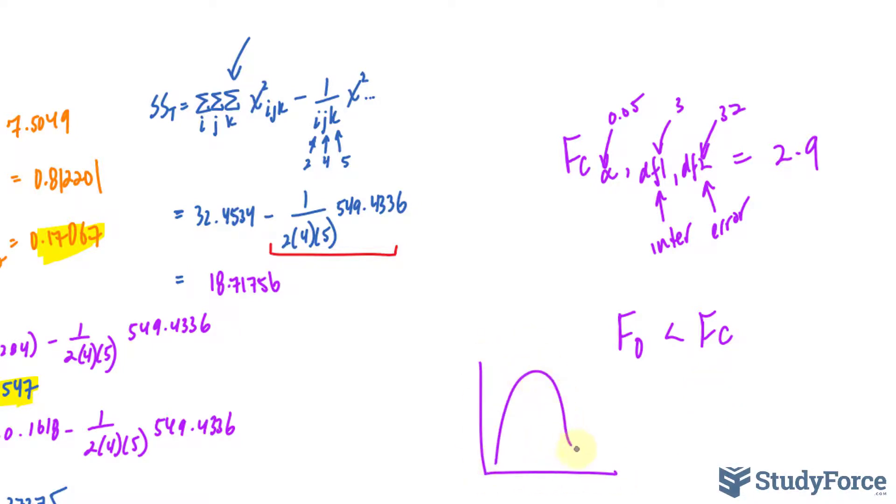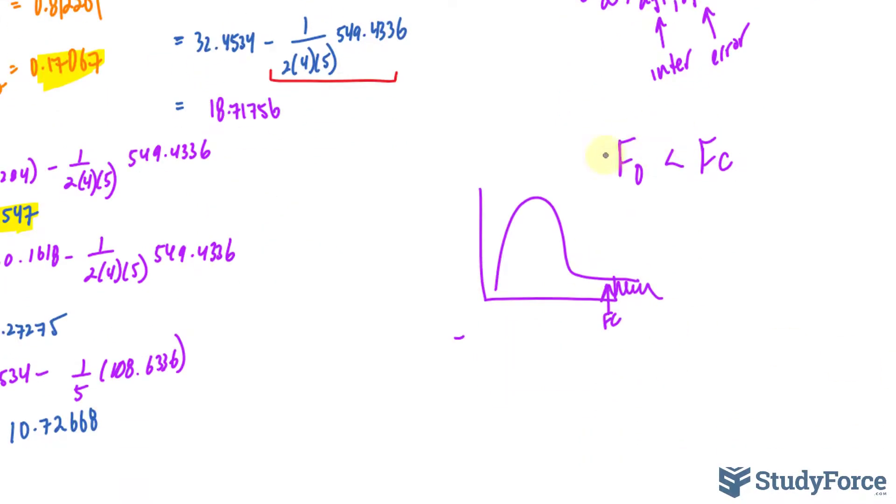Now, let me show you. On an F distribution chart, FC is here. The rejection region is after it, and it falls short of that, somewhere here, F observed. Because it does not fall in the rejection region, we do not reject the null hypothesis.